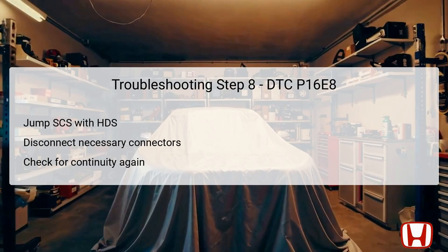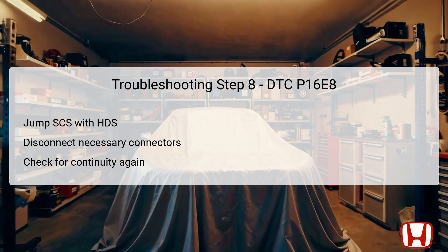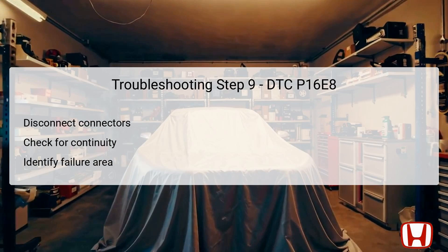At this stage of troubleshooting, initiate a jump on the SCS line using the HDS and allow it to sit for over a minute, preparing for the next round of checks. Disconnect the requisite connectors, including those from the shutter grille and PCM, which allows for a clearer assessment of the LIN communication path. The main focus here is to check between the terminal of the shutter grille and the corresponding PCM pin. Confirming continuity at this point indicates that the LIN battery sensor wire is functioning correctly. If no continuity is found, focus on repairing potential breaks in the LIN battery sensor wire.